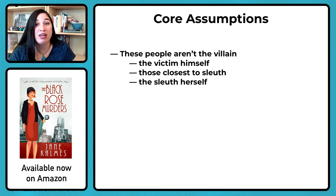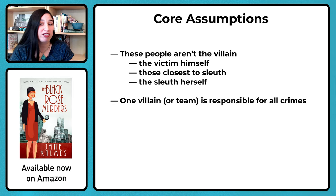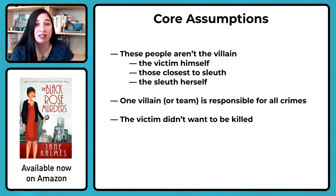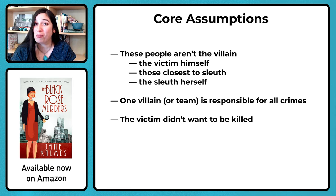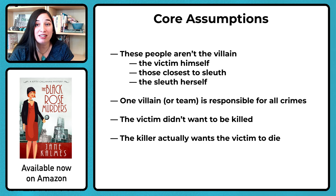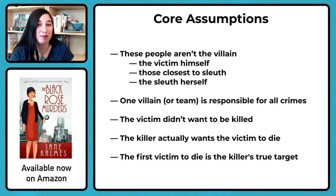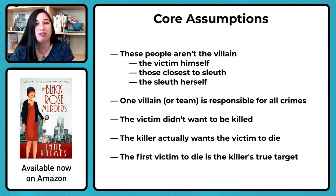Here are some other core assumptions that we can count on our readers bringing with them to our book. One villain or team of villains is responsible for all the crimes in the book — so we can violate this assumption, perhaps by having two villains each carrying out separate plots unbeknownst to one another, or maybe by having one villain piggyback onto the first villain's crime. The victim didn't want to be killed — we could violate this assumption, perhaps by having the killer and the victim working together to carry out an insurance scheme which will leave one of them dead but the other very wealthy. The killer actually wants the victim to die — maybe the killer makes a fatal mistake resulting in the victim's death. The first victim to die is the villain's true target — this could be false if the villain killed the first victim by mistake, or perhaps to divert suspicion from his true motive, by killing someone with an obvious connection to his true victim, forcing investigators to zero in on the connection between the victims as the motive and ignoring the villain's true motive.